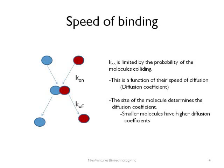The speed of binding is not really determined by the affinity of the aptamer for the target. It is a function of the speed at which the molecules are moving in solution. Small molecules such as aptamers have higher diffusion coefficients than antibodies and thus have a higher probability of colliding with the target molecule in a given time than an antibody.